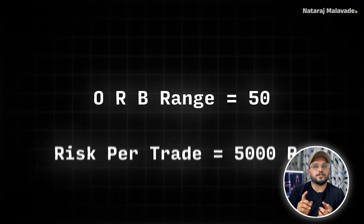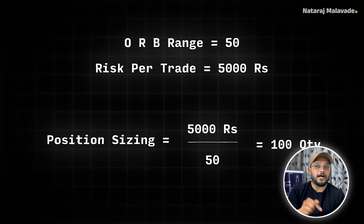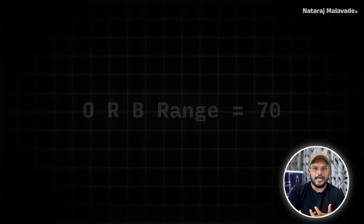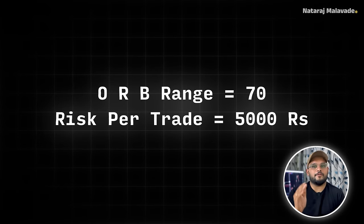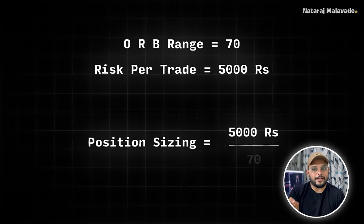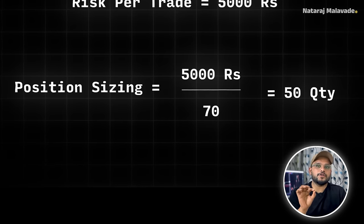For example, assume the opening range is 50 points in Nifty and you are prepared to risk 5,000 rupees. Divide 5,000 by 50 — that gives you 100 quantities. Your risk will not cross 5,000 rupees. Now if the opening range is 70 points: divide 5,000 by 70, which gives approximately 71.4 — but since Nifty futures trade in lots, you'd opt for one lot of 50 quantities. This adjustment ensures that even with a wider 70-point range, you do not risk more than 5,000 rupees. Your risk is managed through position sizing, not through the strategy's stop loss width.